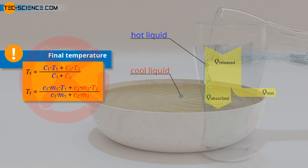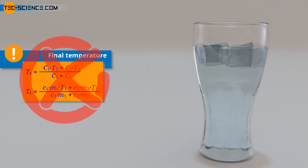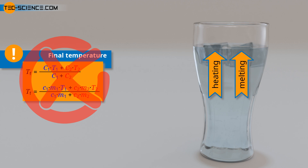However, the validity of Richmond's Law must be limited for the case that a phase transition occurs during the equalization of temperatures. This is the case, for example, when ice cubes are poured into a warm beverage. In this case, heat is transferred from the beverage to the ice cubes not only by the heating of the ice cubes, but also by the melting of the ice cubes. This extra amount of heat must then also be taken into account. We will go into this case in more detail in another video.